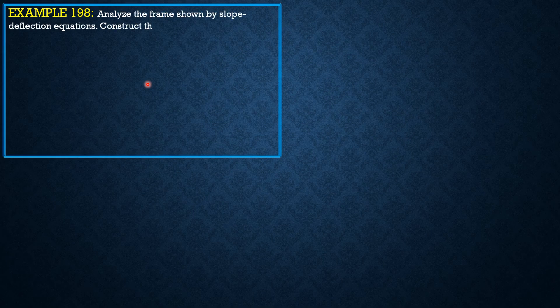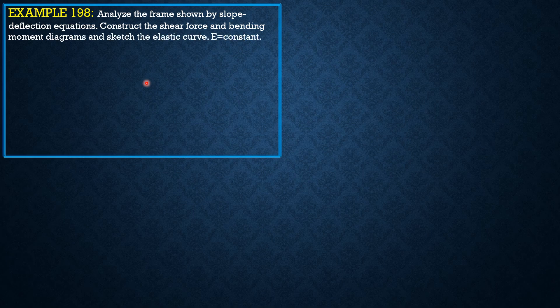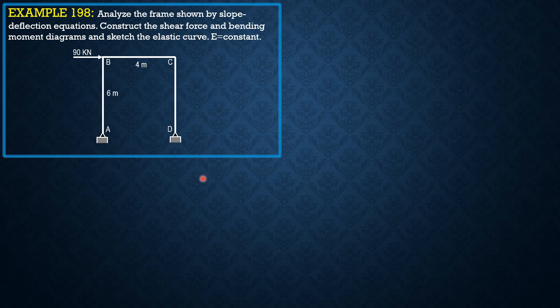Analyze the frame shown using slope deflection equations, then construct the shear force and bending moment diagrams and sketch the elastic curve. EI is constant for this case, and the frame undergoes sidesway because of the load that makes the frame rotate clockwise.